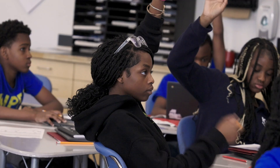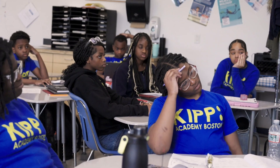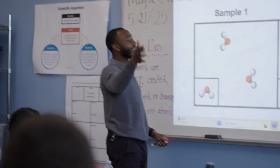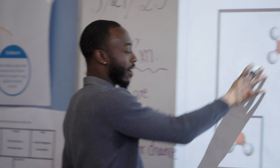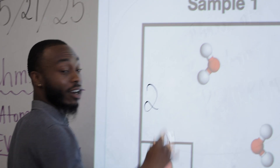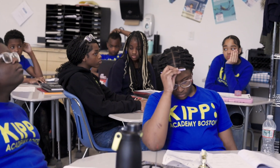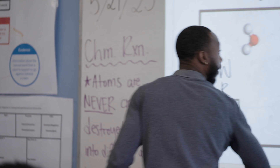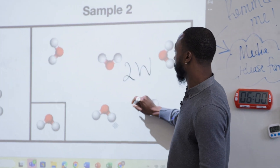Right now I want to hear from Remy. You agreed with Cameron — you said those properties are going to be different. Why? Remy, nice and loud. Why did you say those properties will be different? Because in sample one they had two oxygen molecules. Why don't we use the colors? You said two — what colors? Two white atoms and one red atom. And what about sample two, Remy? They also have two white atoms and one red atom.